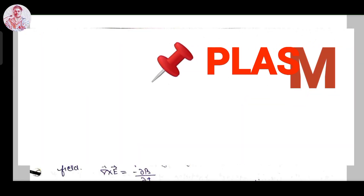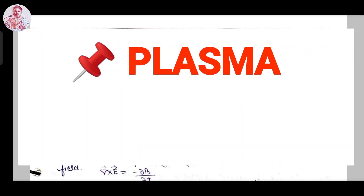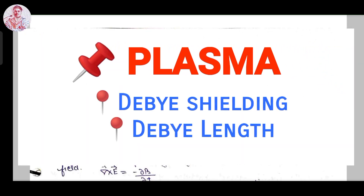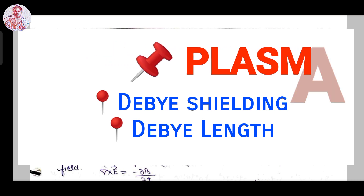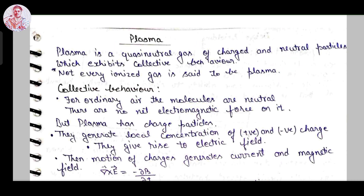Hello friends, today we will discuss about the fourth state of matter, which is plasma. As we know, our whole universe is formed up with a lot of dark matter and dark energy — 69.5 percent with dark energy and 29.5 percent is almost dark matter. Only 0.5 percent is our visible matter.